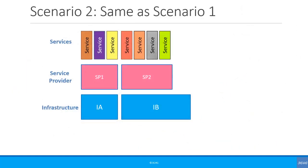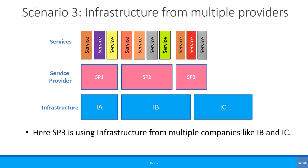Scenario two is basically the same as scenario one — we wanted to show this so we can further explain scenario three. In scenario three, you can see that the service provider SP3 uses infrastructure from multiple companies. In this example we have only shown two, but it could be more than two.